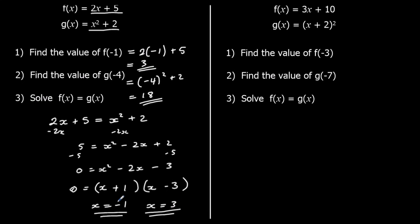So if we put negative 1 into our f and our g function, we get the same output. And if we put 3 into our g function, we would get the same output.